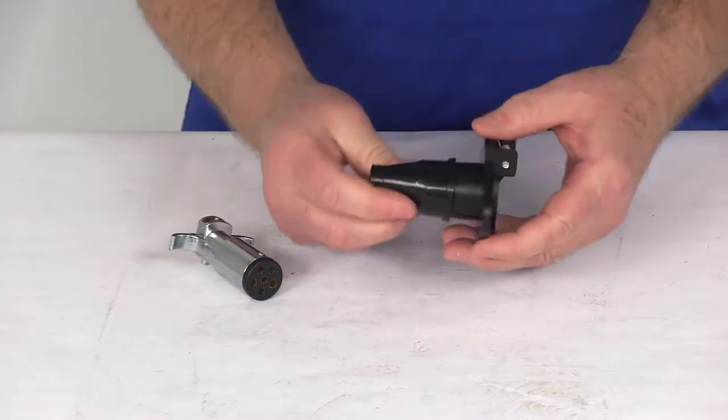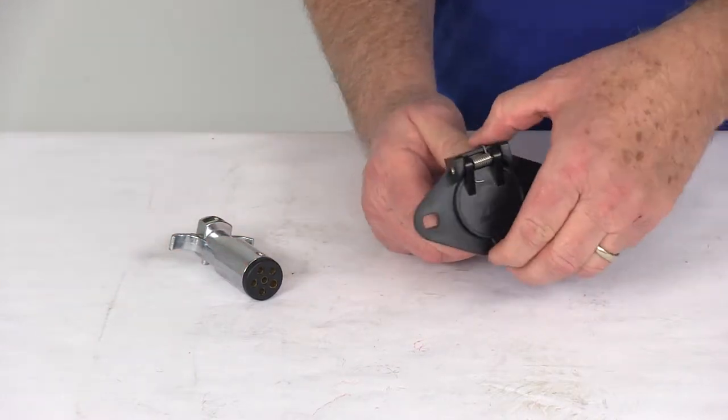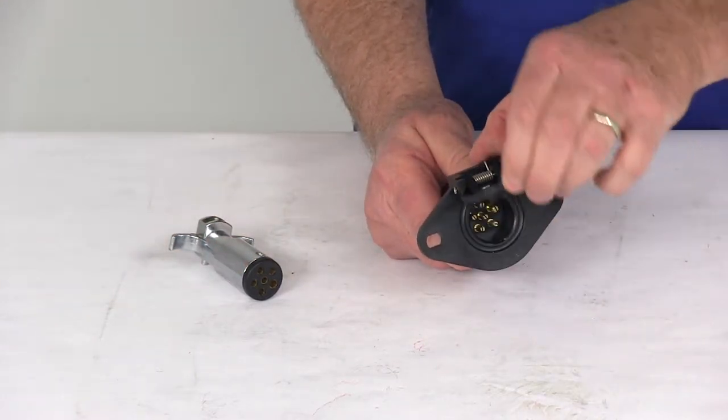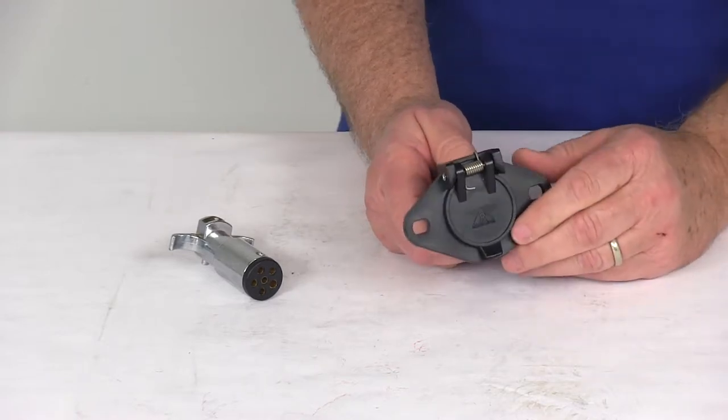The other connector right here will wire to the vehicle that's being towed. It includes this nice spring-loaded cap that will cover the connector when you pull out the plug to keep it protected from the elements.